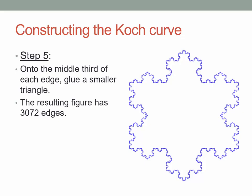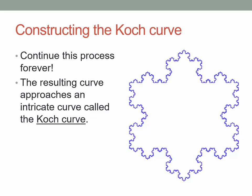We're beginning to reach the limit of what you can draw and see on a screen, but let's take it one more stage. The resulting figure, obtained by gluing small triangles onto the middle thirds of the edges at the previous stage, now has 12,288 edges. I want to continue this process forever — or at least imagine that I've continued it forever. Despite the fact that we're gluing on infinitely many triangles, very soon the picture stabilizes. The resulting curve, which is the limit of all these steps, is an intricate curve called the Koch curve.